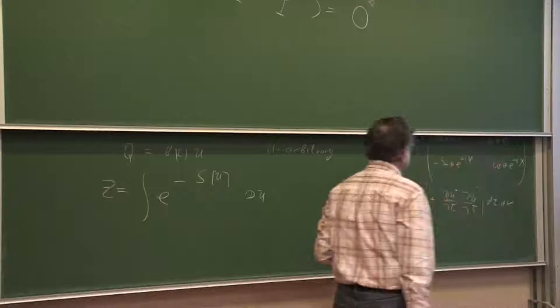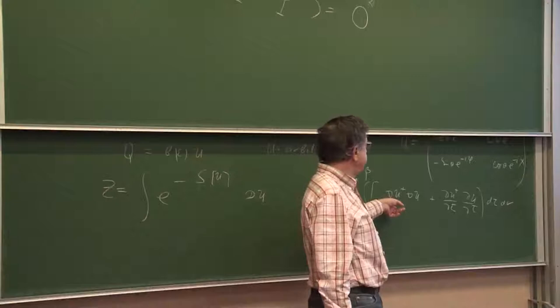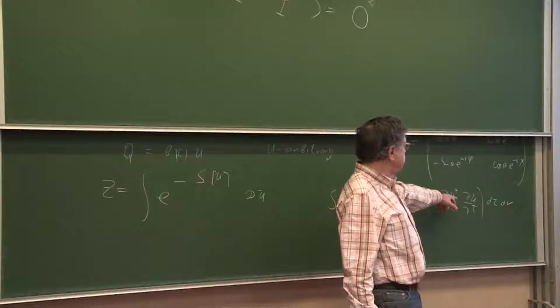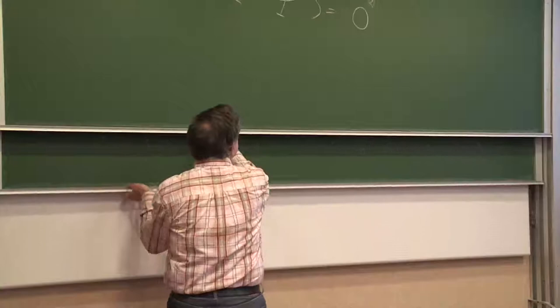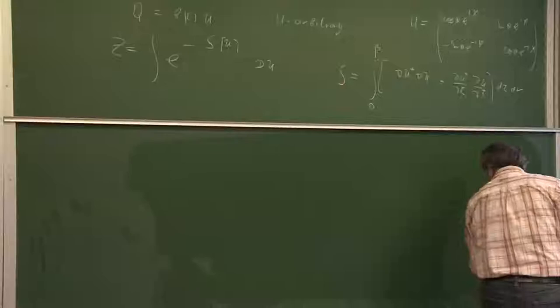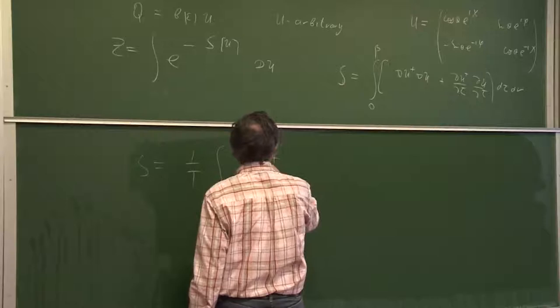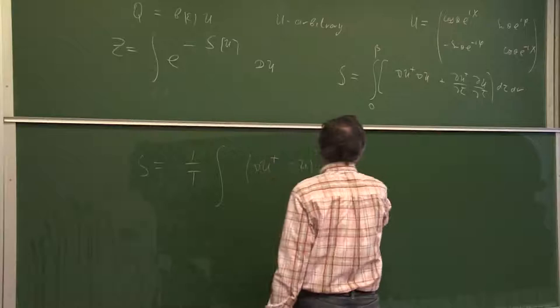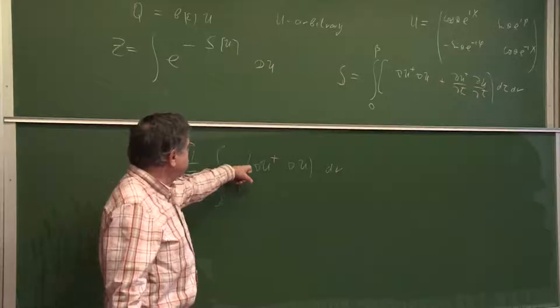In principle one could study this at zero temperature, but in two dimensions that is effectively a three-dimensional sigma model when beta goes to infinity. However, if we are at finite temperatures we can neglect the time dependence of configurations and write simply s = (1/T) times the integral of the coefficient times gradient u^dagger times gradient u over r. This is the action of the free energy for the sigma model.